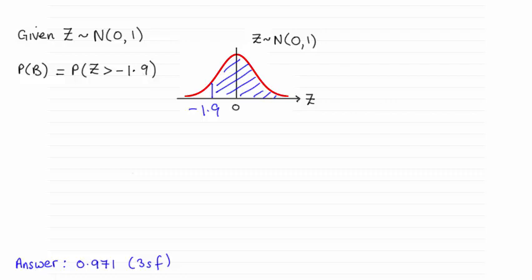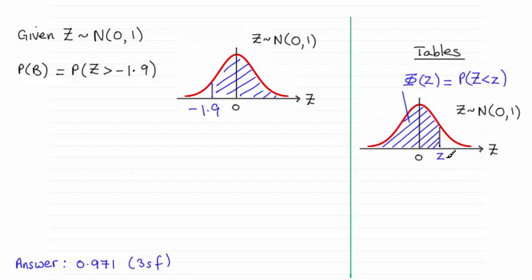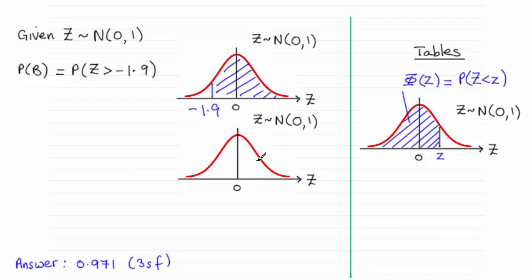So knowing that the tables only give us area to the left of Z and Z has to be greater than zero, then what I can do is just pick up on the symmetry of the graph.